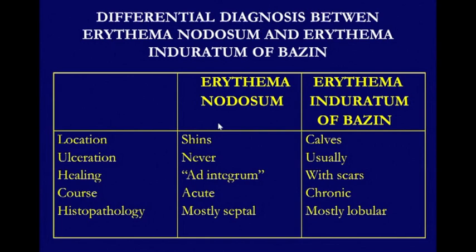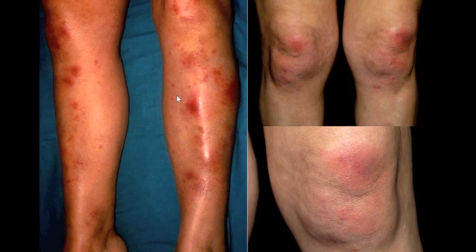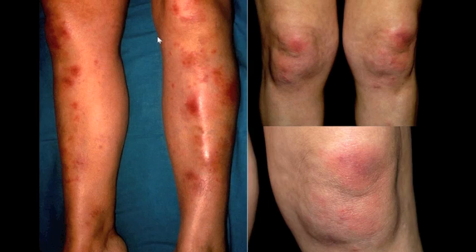Erythema nodosum is mostly involving the anterior aspect of the lower legs. It is very rare — almost never — to see ulceration of the skin surface. And curiously, in spite of the intense inflammatory infiltrate, most of the time the restitution is complete with no residual scars. The course is more acute, and this is the prototype of mostly septal paniculitis. Clinically, we see erythematous nodular lesions mostly on the anterior aspect of the legs. Sometimes the patient has systemic signs like malaise, fever, cough during the acute phase.